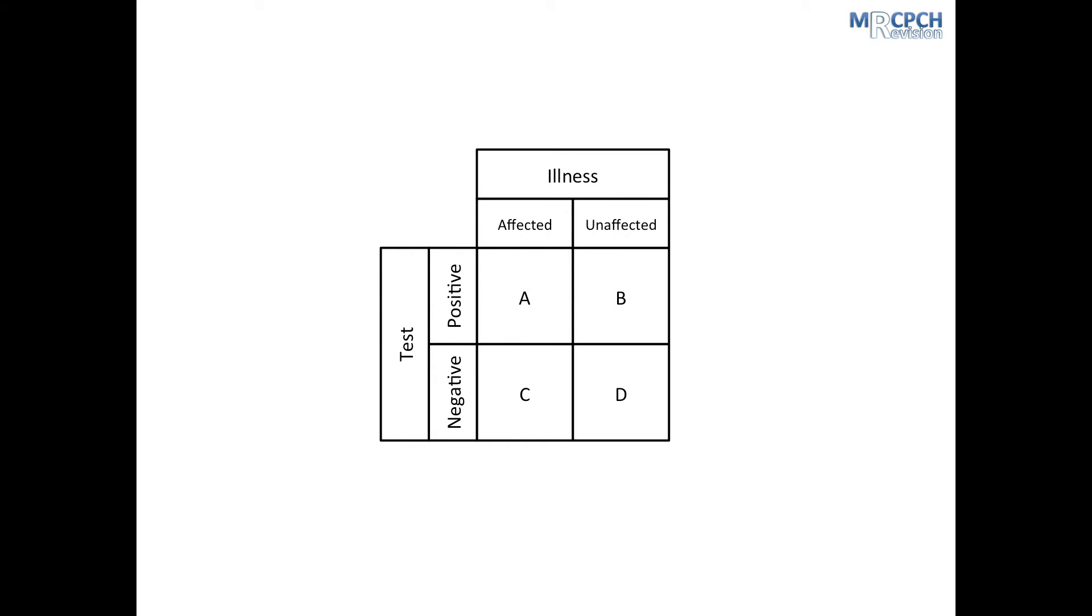To begin with, we'll need to revise some terms. We'll start with sensitivity. Sensitivity is a proportion of people who are affected by an illness that also test positive for that illness. In this 2x2 table, the people who are affected and test positive is represented by box A. Boxes A and C represent the total number of people affected by illness. So, to work out sensitivity, you divide A by A plus C. You can remember this by working from top to bottom down the left column.